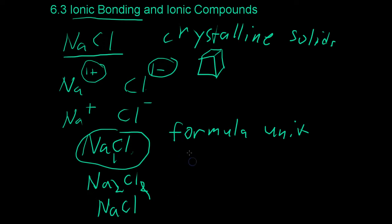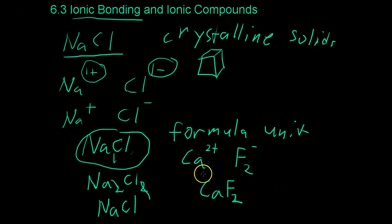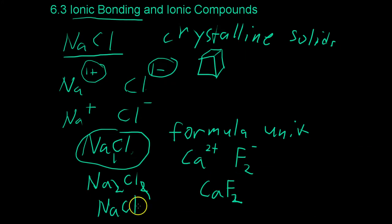To give you another example, if we were to combine calcium, which has a 2+ charge, and fluorine, which has a 1- charge, you'd have to double the amount of fluorine to balance out the two positive charges. So you'd end up with the formula CaF2. This would be the formula unit because you are required, at the most basic level, to have two fluorines for each calcium in order to get this compound.